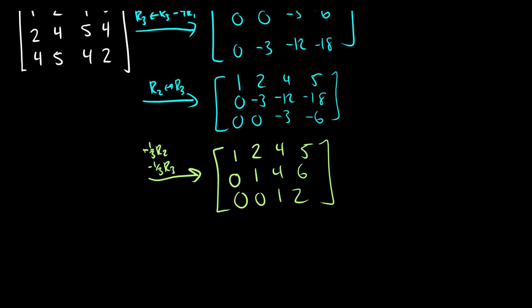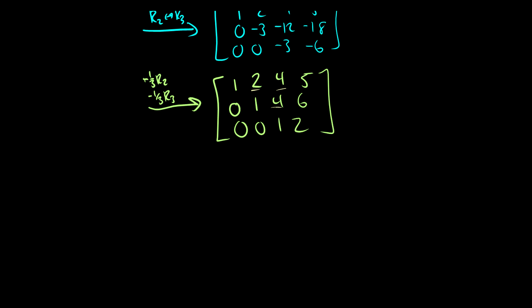We could solve it from here, but we want to reduce this to reduced echelon form. So we need to get rid of this 2 and these two 4s. For our first step, we're going to take row one and subtract two of row two. So we get 1, 0, 0. Two minus two times one is 0, four minus two times four is negative 4, five minus two times six is negative 7. The second and third rows stay the same.